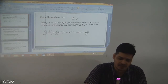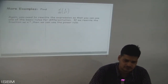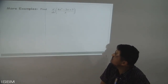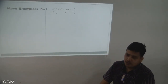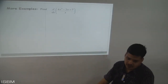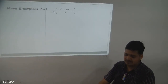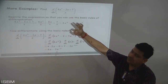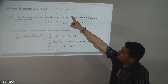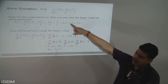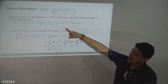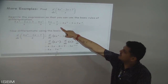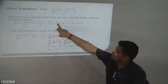Now solve d/dx of (4x³ − 2x + 7)/x. First we bifurcate this into three parts by dividing x into each term: 4x³/x − 2x/x + 7/x, which simplifies to 4x² − 2 + 7x^(−1).